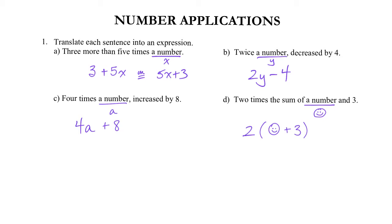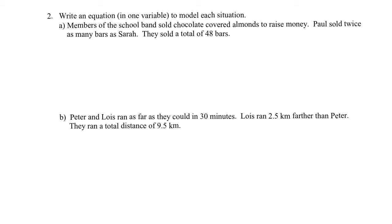We're going to take kind of a half step into where we're going today. When you read instruction two, you're asked to write an equation in one variable to model each situation. The word 'equation' means we need an equals sign, and 'one variable' means it has to always be x or always be y throughout that entire equation. Pause it and give it a read.